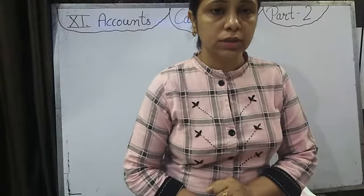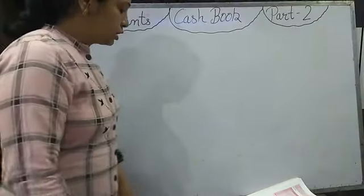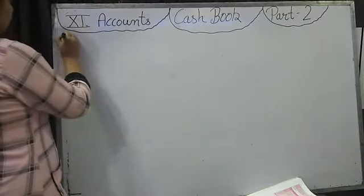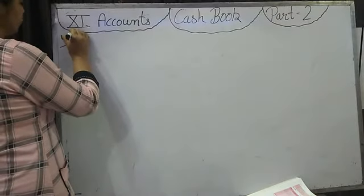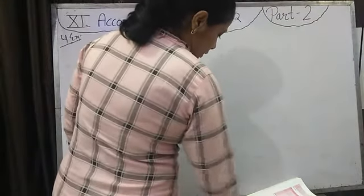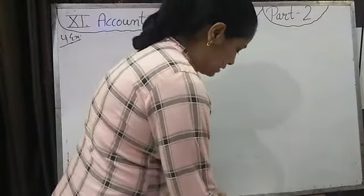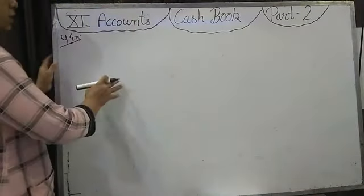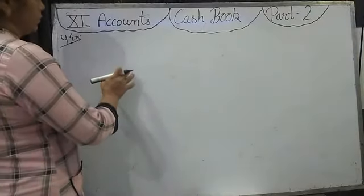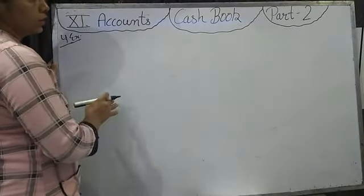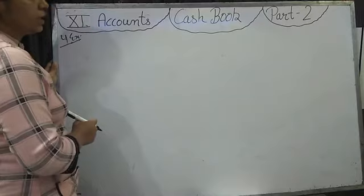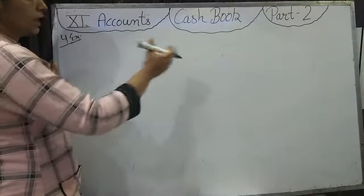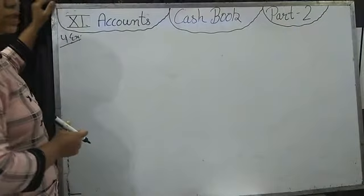Open your book, chapter number 11, Cash Book, fourth illustration. We will do the fourth example in your book. Enter the following transactions in single column cash book and journal. In this question we have to make the cash book, and whichever entry is not shown in the cash book, for that we have to pass a journal entry.